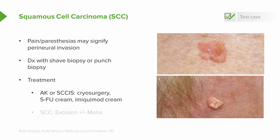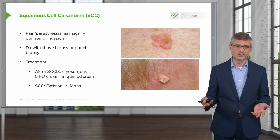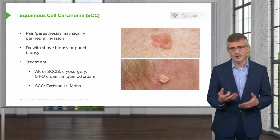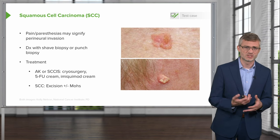You're going to diagnose this by performing a shave biopsy or perhaps a punch biopsy. Treatment will depend on whether you've got actinic keratosis or actual skin cancer. For actinic keratosis and squamous cell carcinoma in situ, you can use cryosurgery — basically freezing the lesion — or 5-FU cream, imiquimod cream, and close observation. Once you've developed into squamous cell carcinoma, you'll need an excision, and may or may not need Mohs surgery depending on the lesion type.